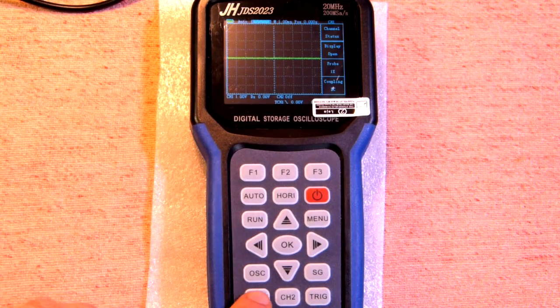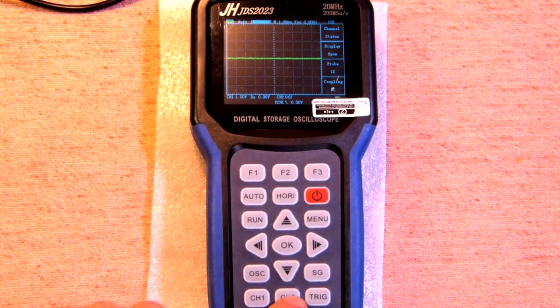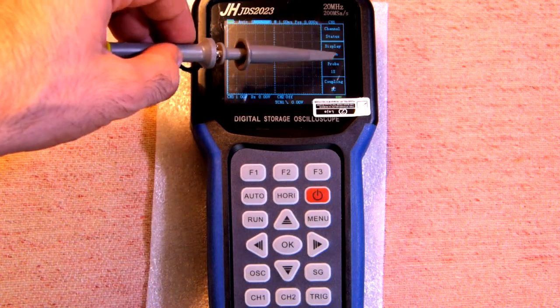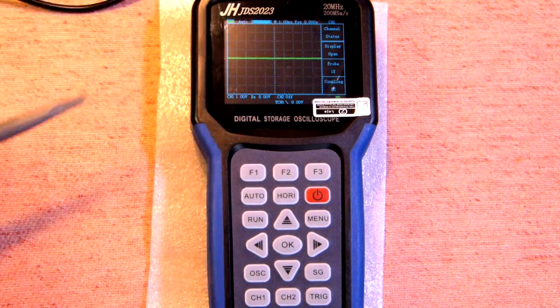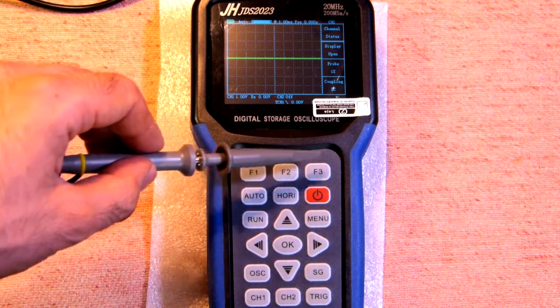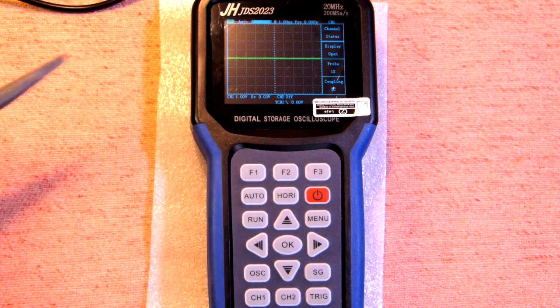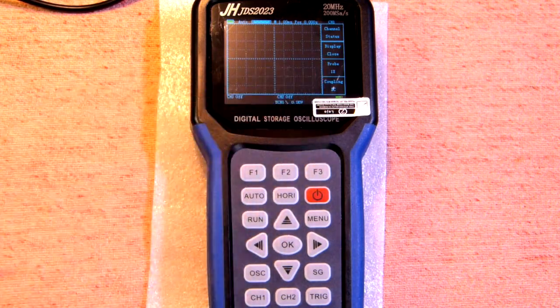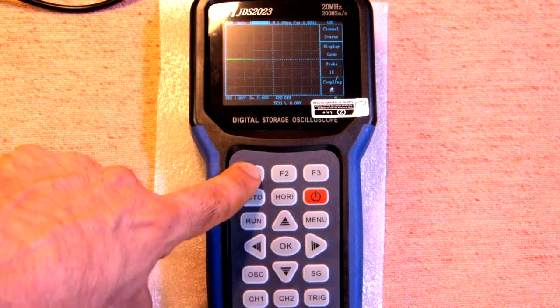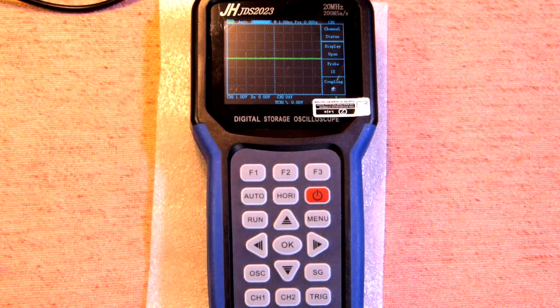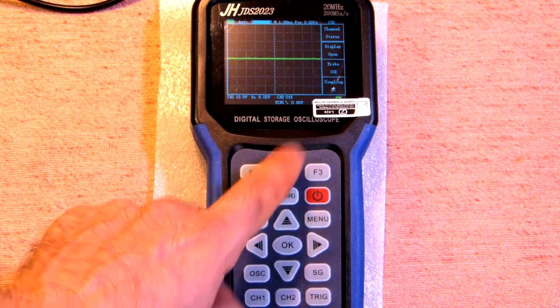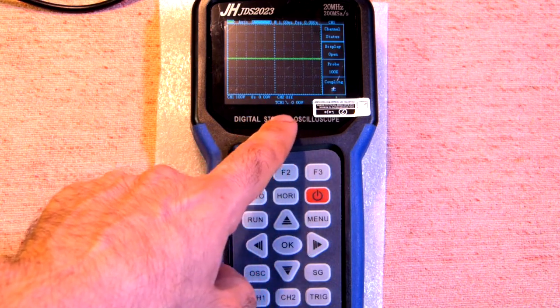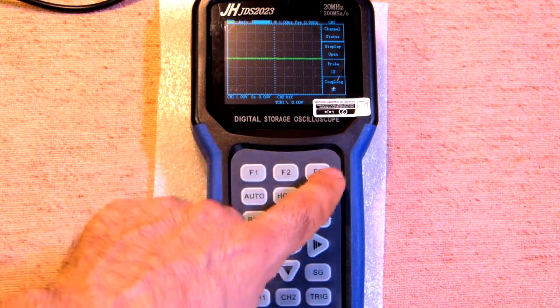In case of channel 1 we press channel 1, in case of channel 2 we press channel 2. Here we have channel status and all the functions one, two, three can be changed with the help of these buttons f1, f2 and f3. So display open means that the channel is on. In case of f1 now we have display close. It means that the channel is off. Once again it's on. The probe is 1x in case we press f2. It's 10x and 100x and here the measurement will change. And coupling you can change DC and AC.